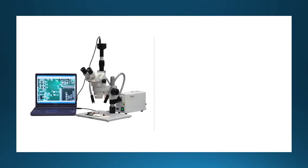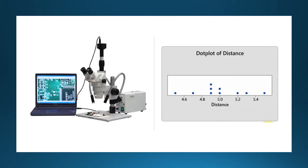To illustrate, let's take 10 measurements of the same circuit board with the PCBViewer measurement tool and plot them on a dot plot. Notice that the data values are between 4.5 and 5.5.